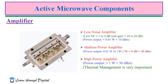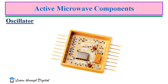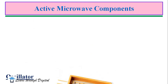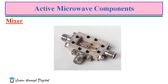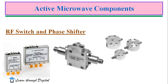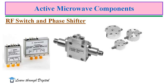An amplifier is an example of an active microwave component. Types include low-noise amplifiers, medium-power amplifiers, and high-power amplifiers. Amplifiers are the best example of active microwave components because they are capable of generating microwave power — they amplify a given input signal. The oscillator and mixer are further examples, along with RF switches and phase shifters.